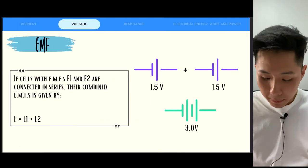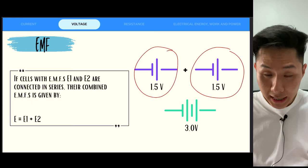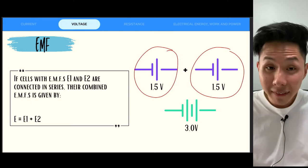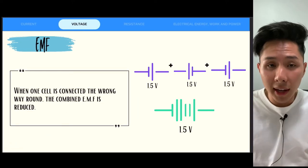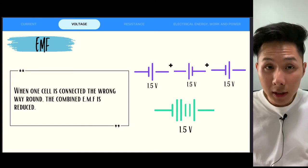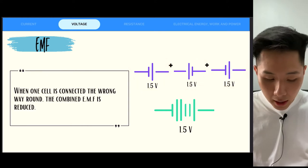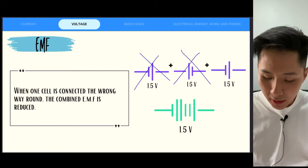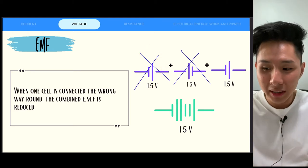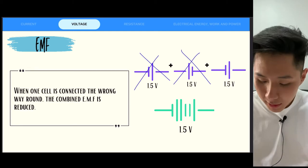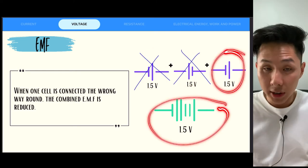If we connect two batteries together, each with an EMF of 1.5 volts, we get 3.0 volts — very straightforward. But do know that when you connect cells, you need to connect them properly. If they are not connected in the same direction, they will cancel each other out — one cell pushes electrons one way, the other pushes in the opposite direction. So when three cells are connected incorrectly in this manner, you'll only get 1.5 volts.